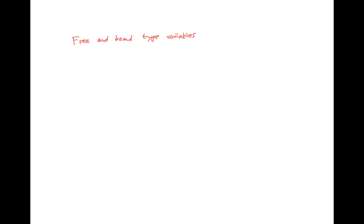Now I'm going to talk about free and bound type variables. Consider as an example the type scheme for all A, A to A times B. Here, the type variable A is bound because there's a quantifier for all A. But the type variable B is a free type variable because there is no quantifier binding B.